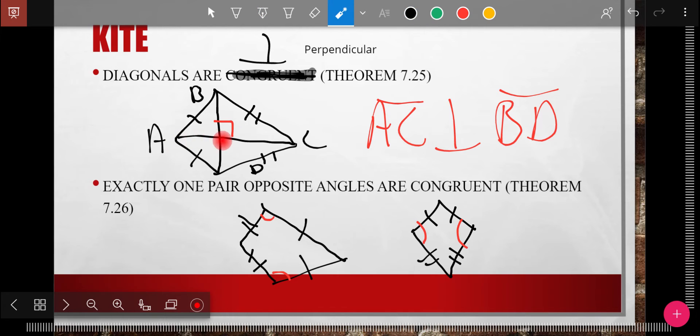Then the perpendicular, the diagonals, AC here and BD are perpendicular, and that symbol means perpendicular, which means that's a 90-degree angle right there, right?